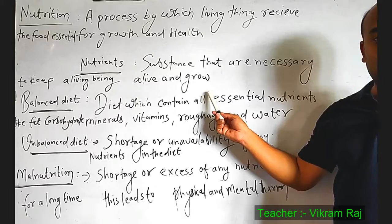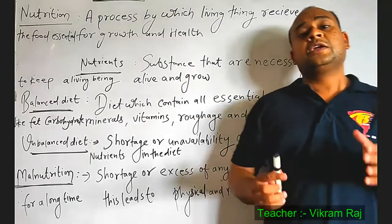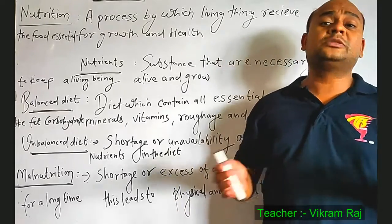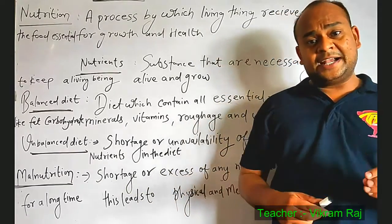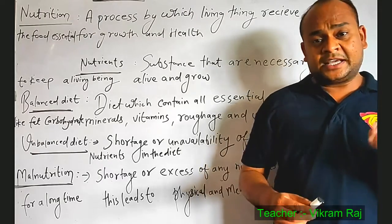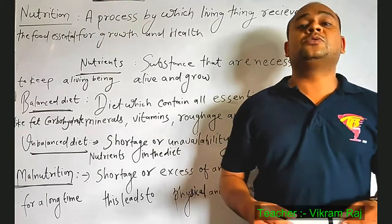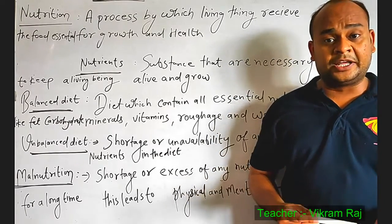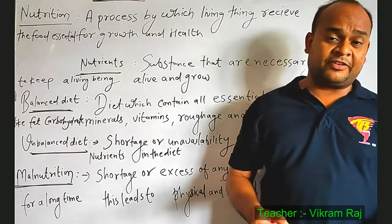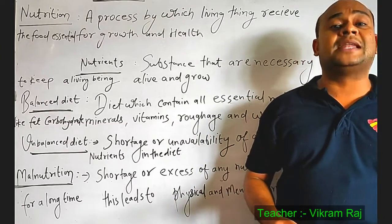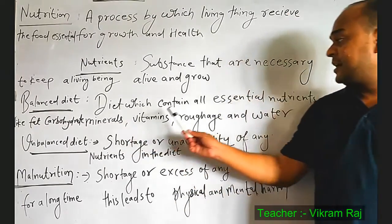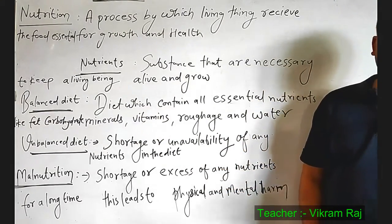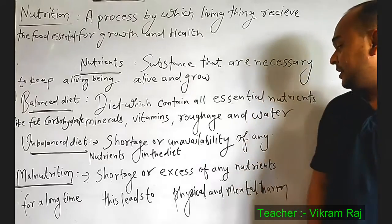The definition of nutrients: substances that are necessary to keep a living being alive and for growth and wellness. Next topic: what is balanced diet? A balanced diet is one in which all essential nutrients are available — carbohydrates, fat, protein, minerals, roughage, and water.